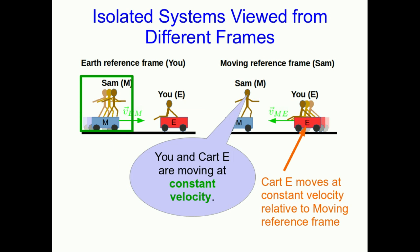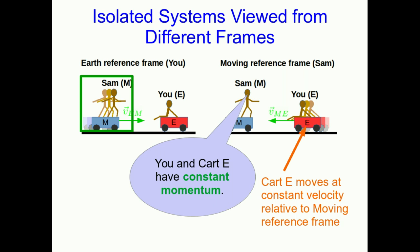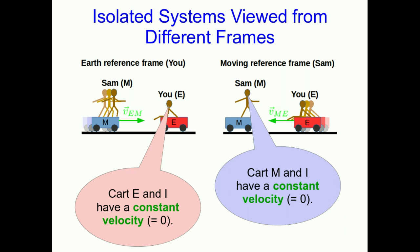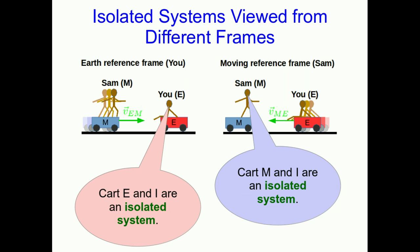By the same argument, according to Sam, you and cart E are moving at a constant velocity and so have constant momentum — meaning you and cart E are an isolated system according to Sam. Each of you believes you are moving at a constant velocity: yours happens to be zero, Sam's is also zero. So each of you believes you are in an isolated system. Sam believes you are in an isolated system; you believe you are in an isolated system; you believe Sam is in an isolated system; and so does Sam.